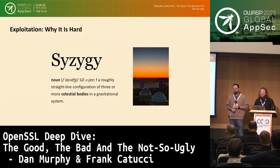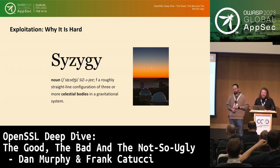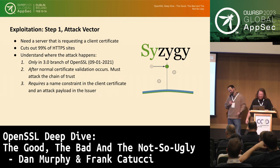The word 'syzygy' is useful in the context of this discussion because it refers to getting different orbital bodies to align. In order to exploit this bug, we do have to move heaven and earth into perfect alignment. But it's still rated a high. So what does that actually mean? What's the story behind this? Should it be a high? Well, that's a discussion for the end.